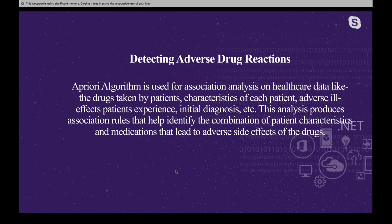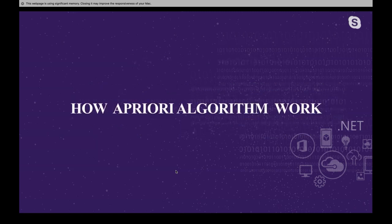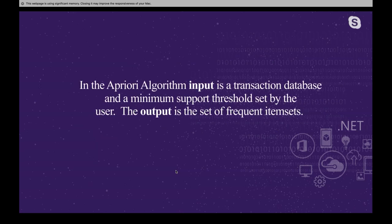Now we are diving into how the Apriori algorithm actually works. Before starting, we need to know what is the input and what is the output of the Apriori algorithm. The input is a transaction database and a minimum support threshold set by the users. The output is a frequent item set.